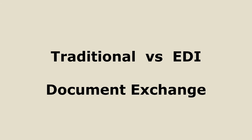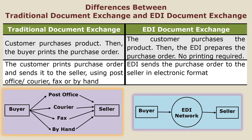Two models of document exchange are available: traditional document exchange and EDI document exchange. In the case of traditional document exchange, whenever a customer purchases a product, the customer has to print the purchase order. The printed purchase order is then sent to the seller using the post office, courier service, fax service, or by hand.